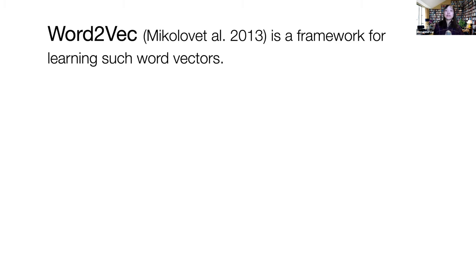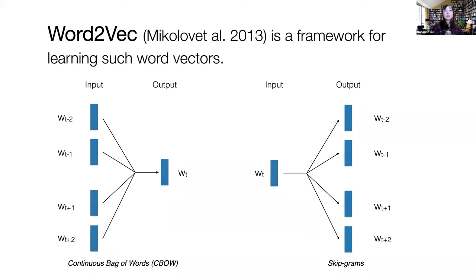One of the most prominent methods is called Word2Vec, invented in summer 2013. It is a framework for learning word vectors and was quite successful. There are two proposed ways to learn vectors: the first is Continuous Bag of Words (CBOW), where you predict a center word from its neighboring words in a small window. The second, skip-gram, is the reverse — you predict the neighboring words from the center word. The two methods are essentially a flipped version of each other.